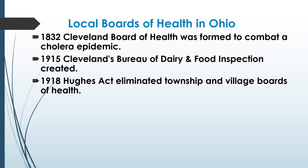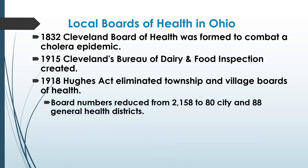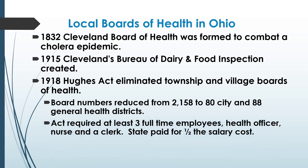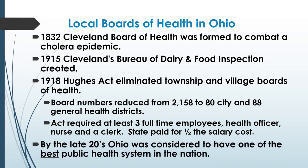In 1918, the Hughes Act eliminated township and village boards of health, consolidating them. Board numbers were reduced from 2,158 to 80 city and 88 general health districts. The act required at least three full-time employees — a health officer, a nurse, and a clerk — with the state paying half the salary cost. By the late 1920s, Ohio was considered to have one of the best public health systems in the nation.